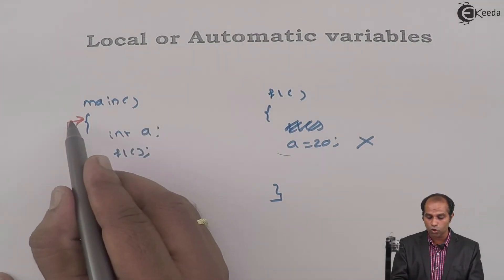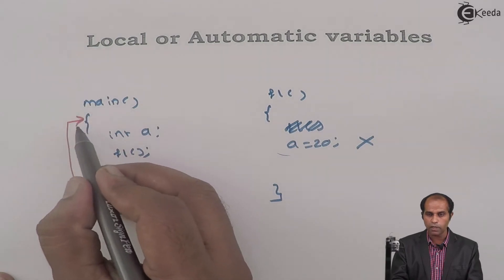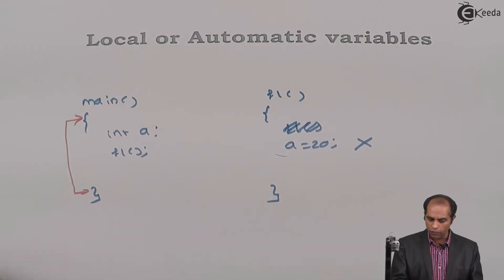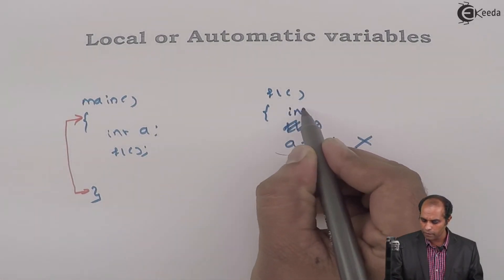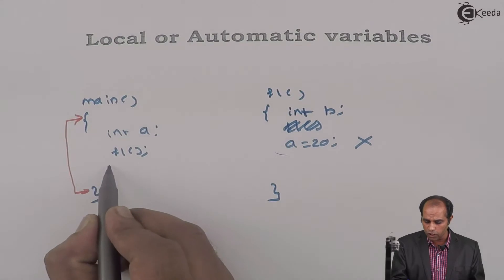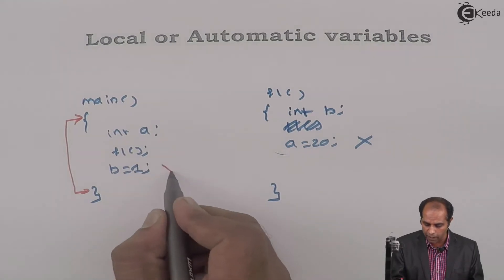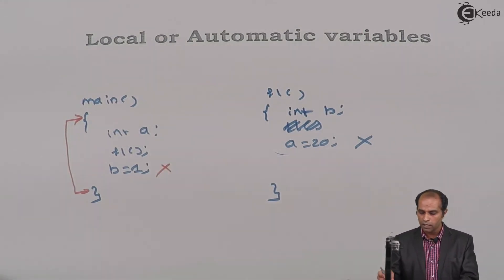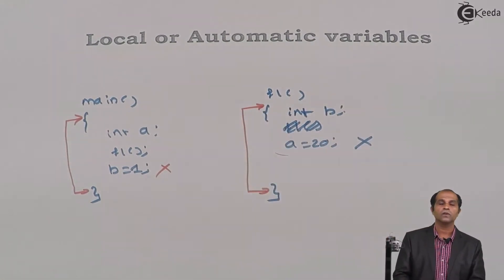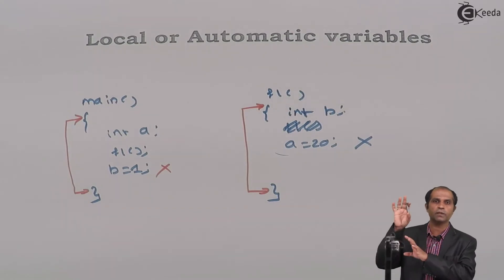So a is a variable which can be used only in main — hence we call this a local variable. A is a local variable used only in main and cannot be used in f1. Similarly, if I declare int b inside f1, then using b = 1 in main will also be invalid, because variable b has visibility only within f1. We call this a local variable.